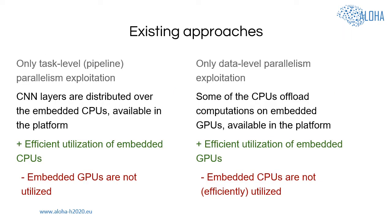The existing approaches typically utilize only one type of parallelism. Some approaches utilize only task-level parallelism by distributing and pipeline-executing CNN layers on the MPSOC CPUs. However, these approaches do not utilize embedded GPUs to speed up computations within CNN layers and typically do not achieve very high throughput. Other approaches utilize only data-level parallelism, where highly parallel computations within CNN layers are offloaded to embedded GPUs. However, the embedded CPUs are utilized only for communication with GPUs and most of the time remain idle, meaning that utilization of embedded CPUs and pipeline parallelism would allow further improvement of CNN throughput.